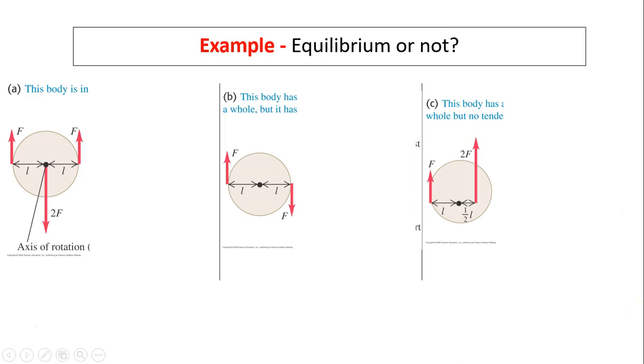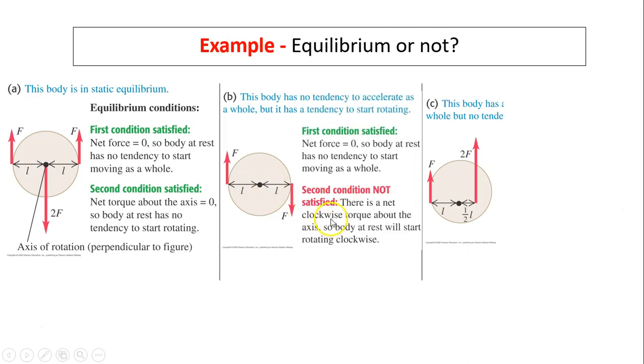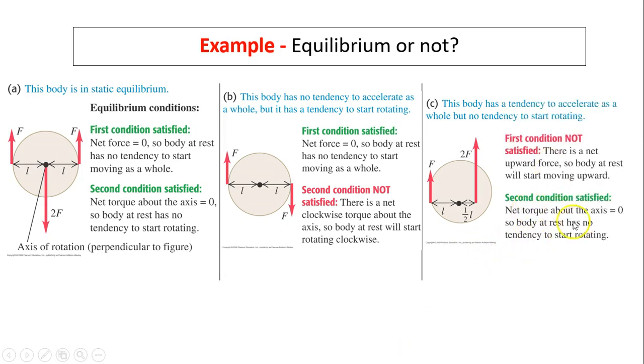Example: equilibrium or not. So here are three situations. Situation one, this is in equilibrium because it satisfies the first condition and the second condition. Situation B, this body is not in equilibrium because it does not satisfy the second condition. The net torque is not zero. Situation C, this body is not in equilibrium because it does not satisfy the first condition. Net force is not zero, even though the second condition is satisfied.